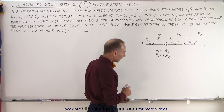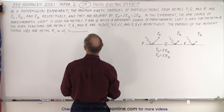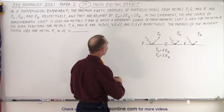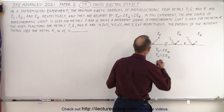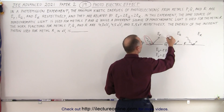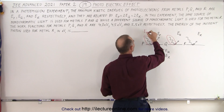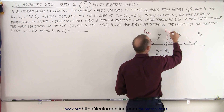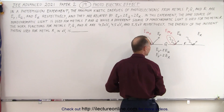They also tell us the incident photons for metals p and q are the same, but different from the one used for metal r. I'll circle the photons for p and q in red to indicate they're the same — this is E_photon_red, the energy of the incoming red photon.